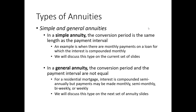In a general annuity, the conversion period and the payment period are not equal. For example, if interest is compounded semi-annually but payments are monthly or weekly, the conversion period and payment interval are not the same. We see this a lot in residential mortgages — typically, interest is compounded semi-annually, but the payment structure is flexible: you can pay every week, every two weeks, or every month, while interest remains compounded semi-annually. That's an example of a general annuity.